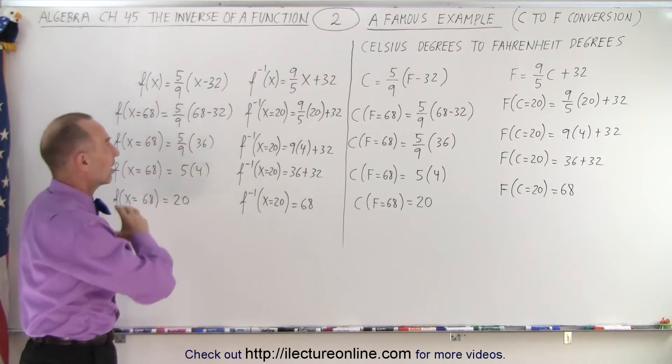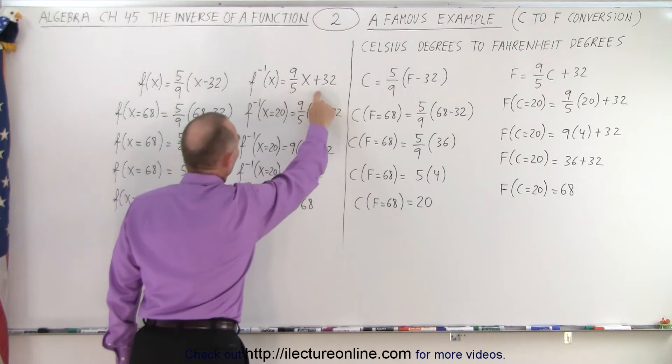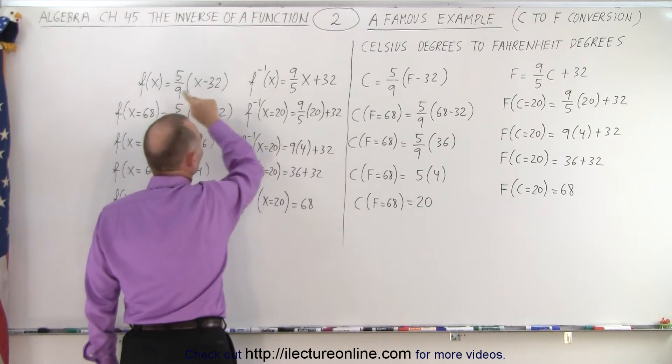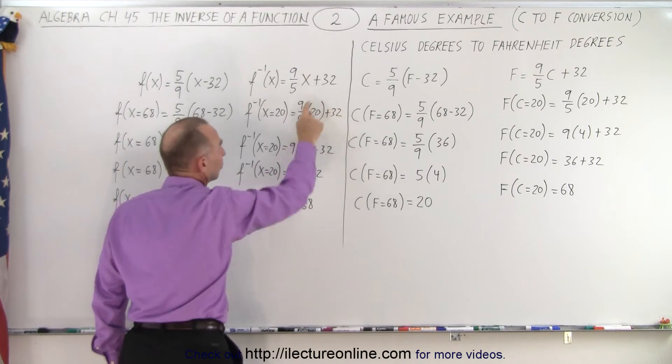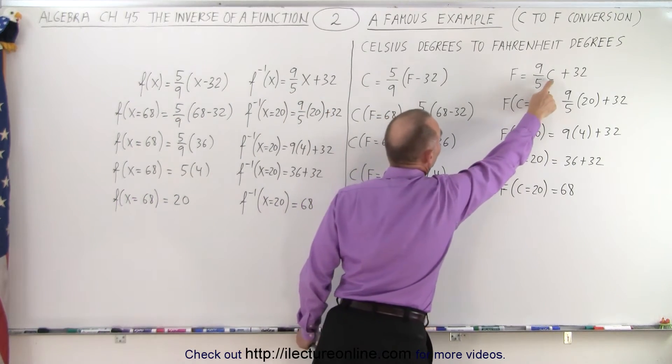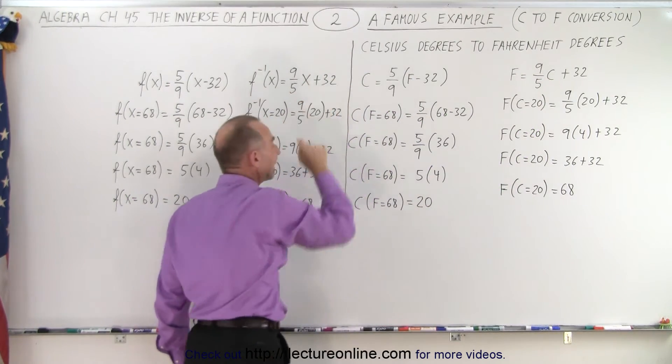Now we take the inverse of that equation. We write this equation down right here. This is the inverse of the function which is 9 over 5 x plus 32. That's what we have over here, but instead of c again we write x.